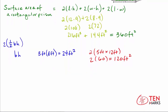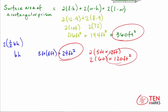Now let's add everything together. The surface area of the rectangular prism is 360 feet squared. The two triangular faces of the roof are 24 feet squared. The two rectangular sides of the roof are 120 feet squared. Adding 24 plus 360 plus 120 gives a total surface area of 504 square feet.